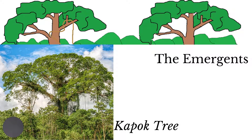The emergent layer is the uppermost layer, made up of the crowns of the tallest trees in the rainforest. This layer has towering trees such as the kapok. The tops of these trees are exposed to the full force of the sun, making it an open and windy environment. Foliage is often sparse on tree trunks.